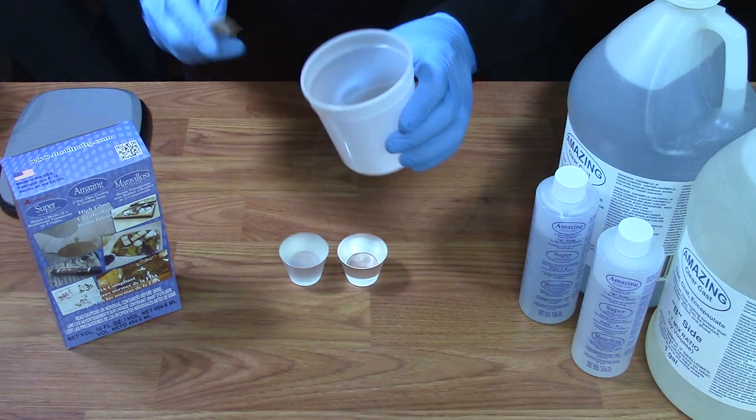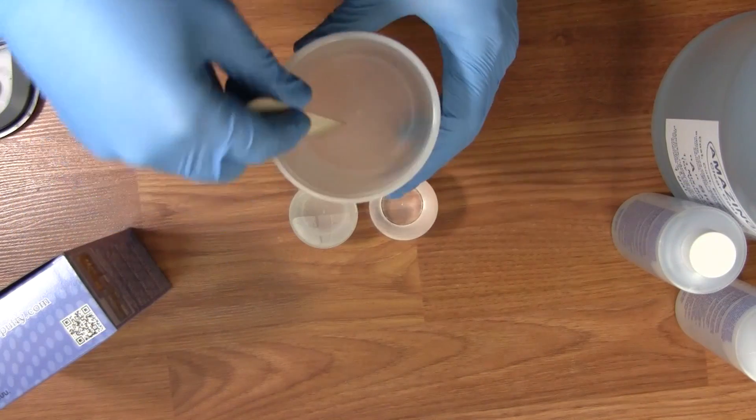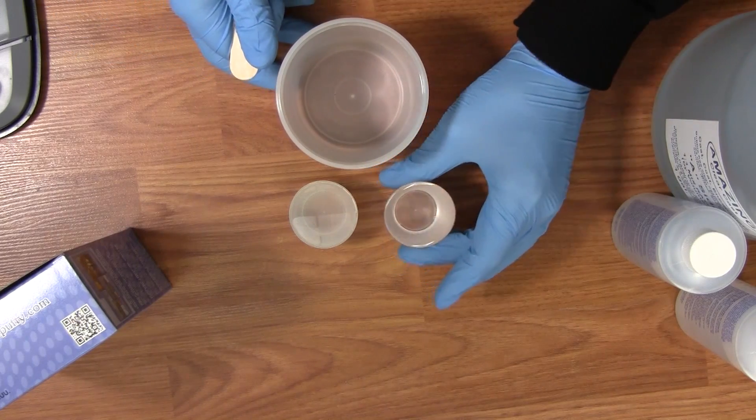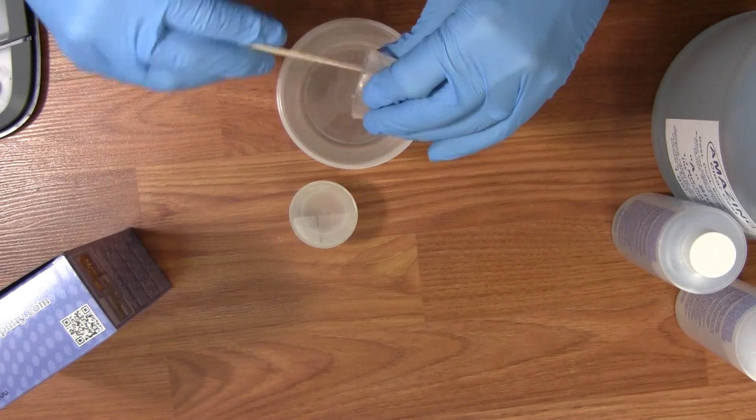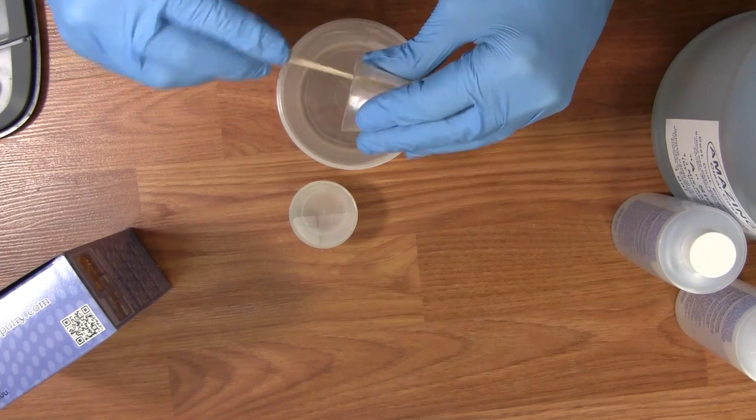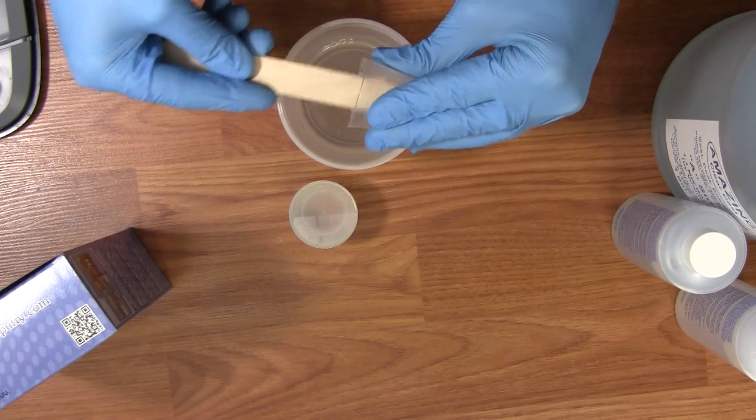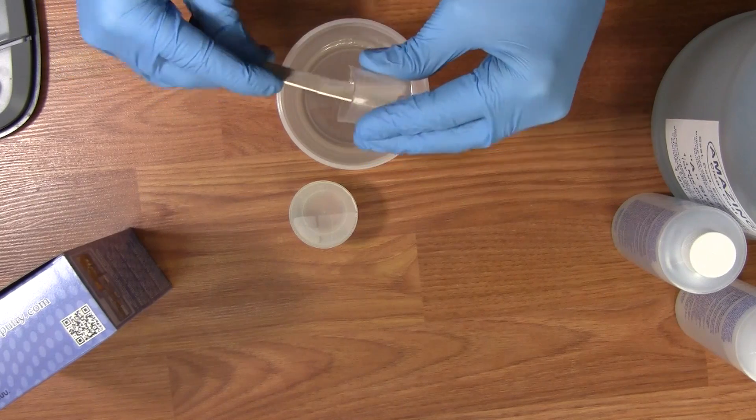Using a mixing cup that has flat sides or flat walls and a flat bottom, you can combine each side into your mixing cup. Make sure you scrape out your measuring container because leaving material in your measuring cup can throw you off ratio.